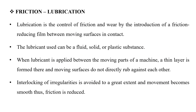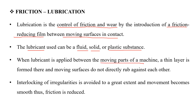Lubrication is used to avoid direct contact between two surfaces, which forms friction. We introduce a friction-reducing film called a lubricant. Lubrication can be a fluid, solid, or plastic substance. It is applied as a thin layer on moving parts so that rubbing is removed, irregularities are avoided, and movement becomes smooth.